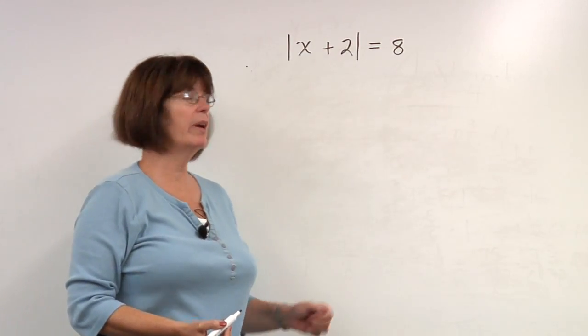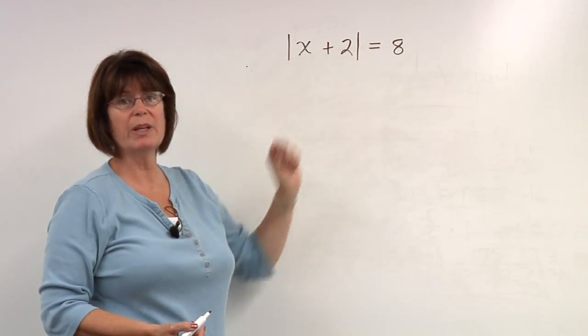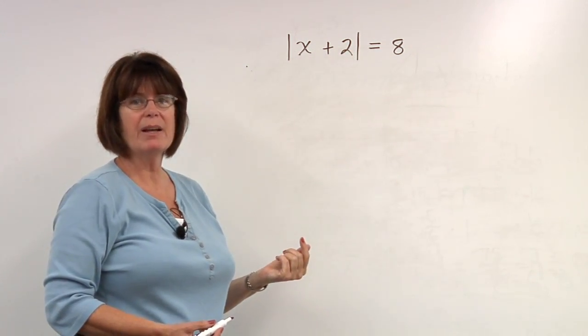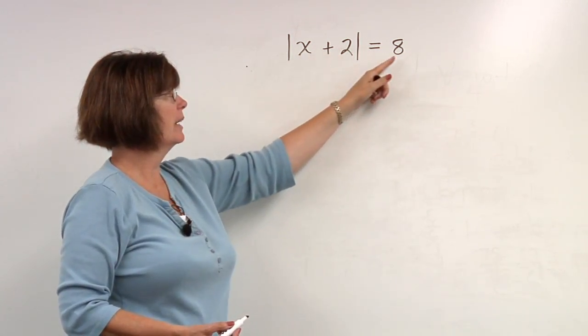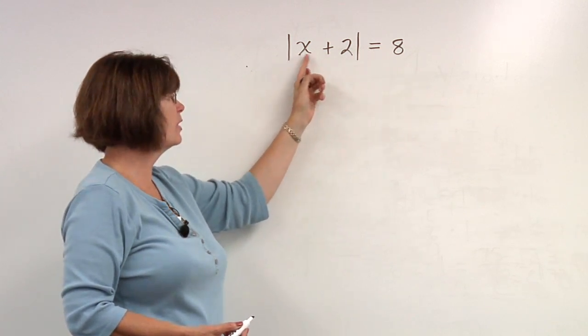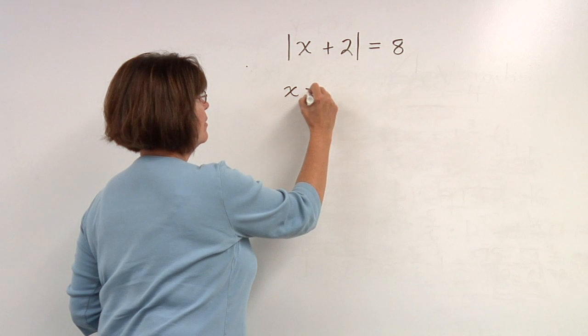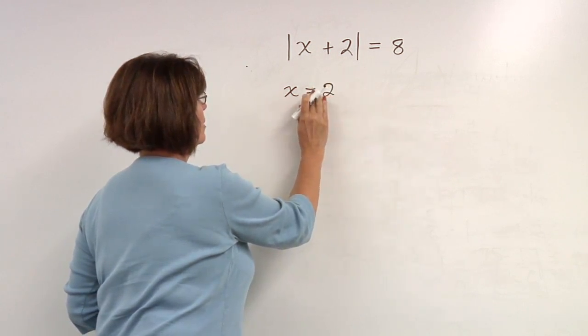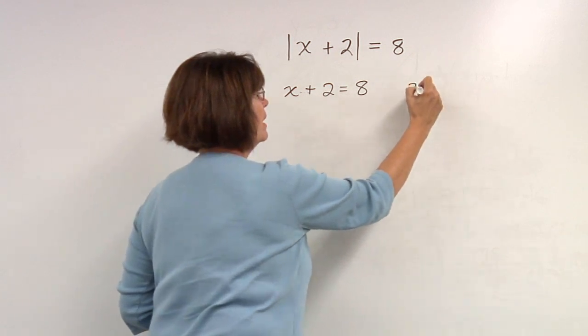Here's another absolute value equation. The absolute value of x plus 2 equals 8. Because absolute value means the distance from zero, and x plus 2 equals 8 means that this expression could either be a positive 8 or it could be a negative 8.